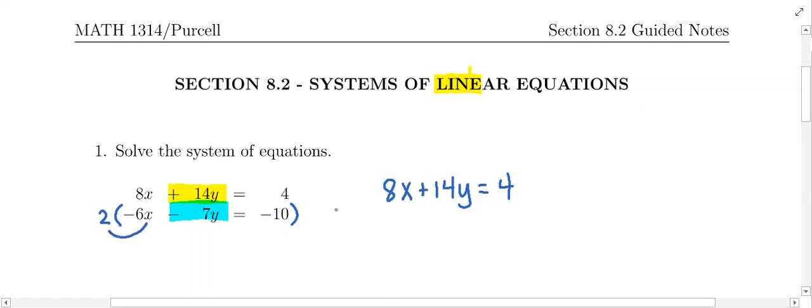So 2 times negative 6x is negative 12x. And then multiply here. 2 times negative 7y is going to give us the negative 14y. And then finally, 2 times negative 10 on the other side of the equal sign is going to give us negative 20. So we've adjusted the second equation. It was okay to leave the first one alone.